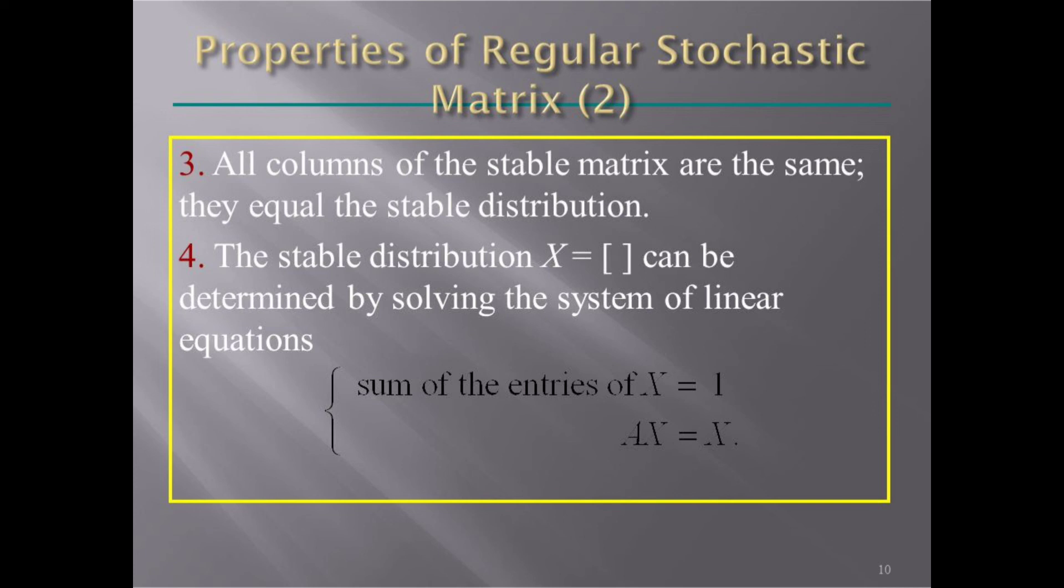All columns of the stable matrix are the same; they equal the stable distribution. The stable distribution X can be determined by solving the system of linear equations: sum of the entries of X equals 1, and AX equals X.